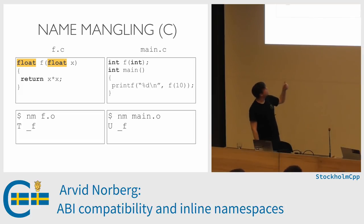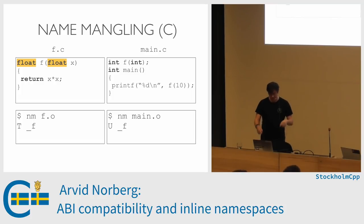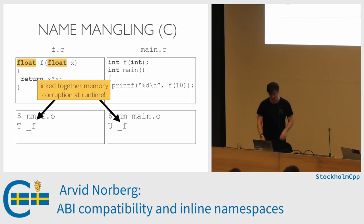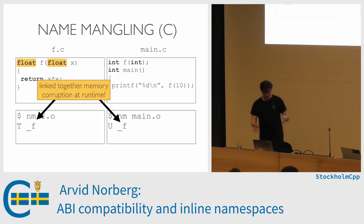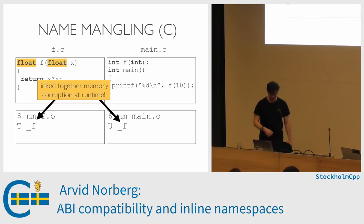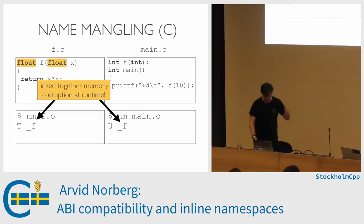If the f object file changes to take a float instead of an int, the function will still be called _f and the reference in main will still be called _f. So they'll just be linked together, and you won't be able to tell anything is wrong until you run it. This violates the ODR — the one definition rule — which I'll briefly touch on in a few slides.